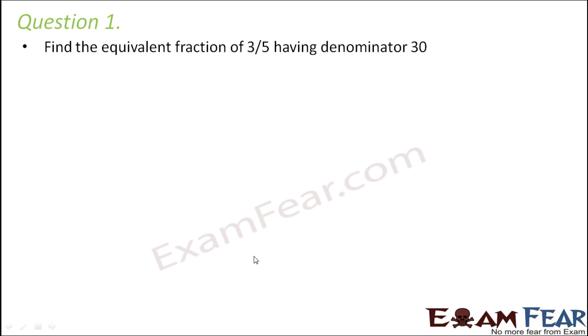Question number 1. Find the equivalent fraction of 3 by 5 having denominator 30. So we have to find out equivalent fraction of 3 by 5, that means we will have to multiply the numerator and the denominator by such a number such that the result has a denominator of 30. So that is our aim.